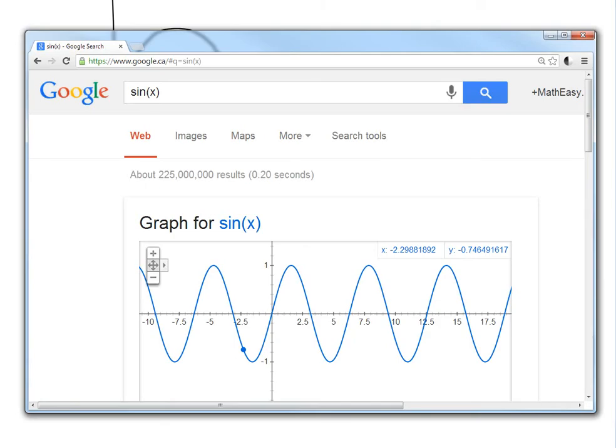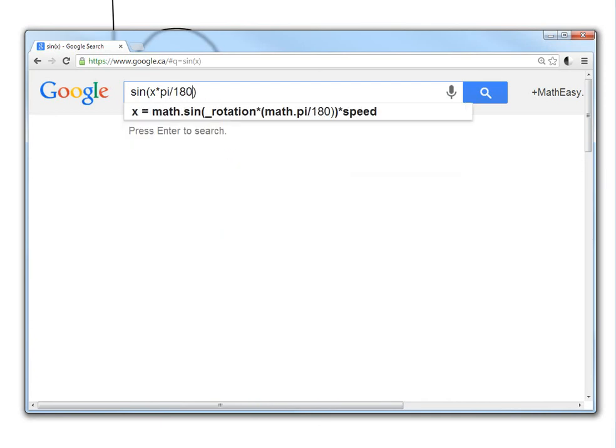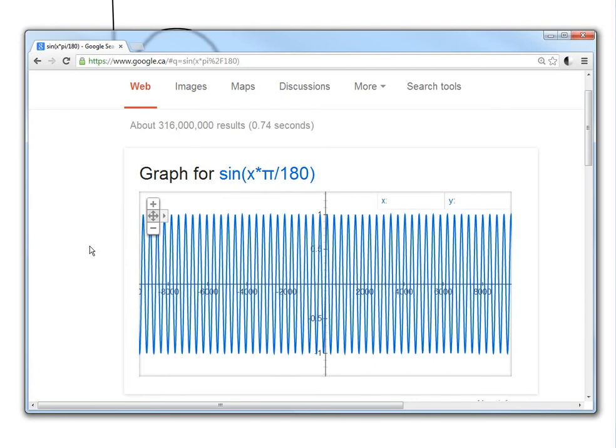You should just try it. So let's put it in right now. Sine x times by pi. Just put pi for pi in Google, divided by 180. As you can see, this is what I mean, it kind of messed up, because there's a lot of stuff to it.